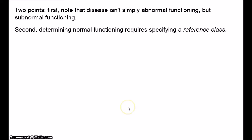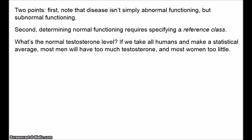Determining normal functioning requires a reference class. Suppose we were to ask: what's the normal testosterone level for humans? If you look at all humans and make a statistical average, you'll end up with the wrong number, because men on average have much higher testosterone than women on average. If you take both men and women and create a statistical average, the vast majority of people would have either too much or too little testosterone. Most men would have far more than average, and most women far less. So clearly, we need to relativise our judgments to sex.